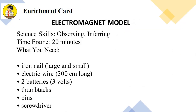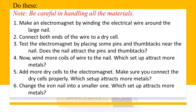Guided Activity 1: Electromagnet Model. Science Skills: Observing, Inferring. Timeframe: 20 minutes. What you need: Iron nail (large and small), electric wire 300 cm long, 2 batteries (3 volts), thumbtacks, pins, screwdriver. Note: Be careful in handling all the materials.